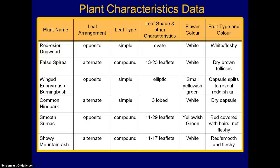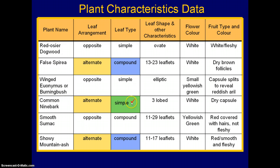Now let's look at the pathway for the alternate-leaved plants: Spirea, Ninebark, and Showy Mountain Ash. Looking at those three and examining leaf type, we find two are compound and one is simple. Similar to the previous example, we only have one alternate simple plant, so that plant is already differentiated from the rest — we don't have to go any further to identify it. We have enough information to build it into the key.